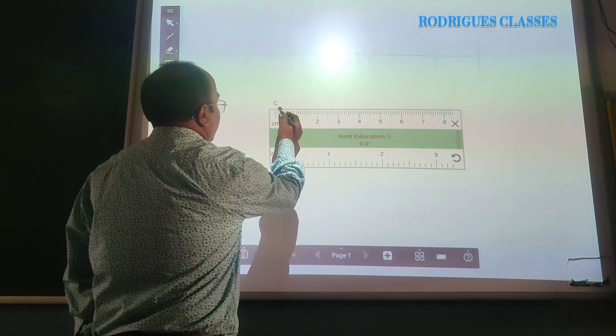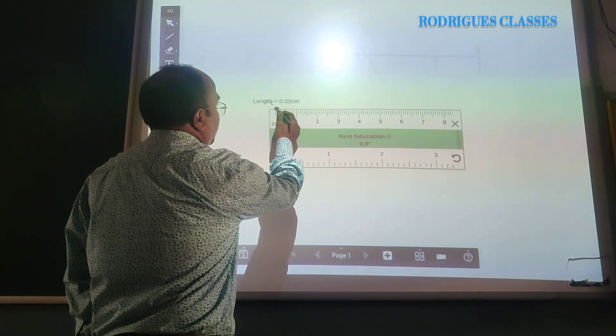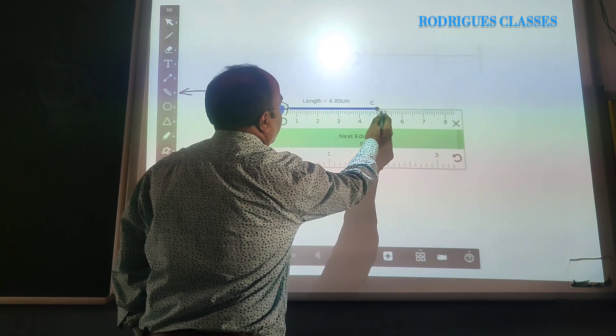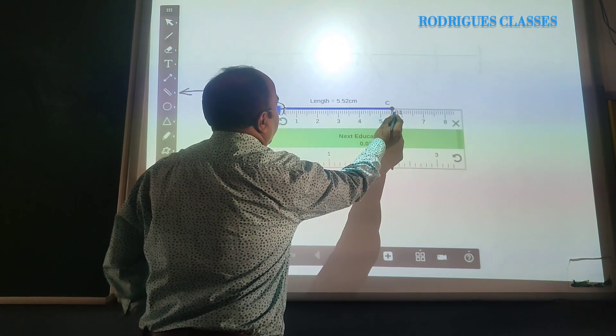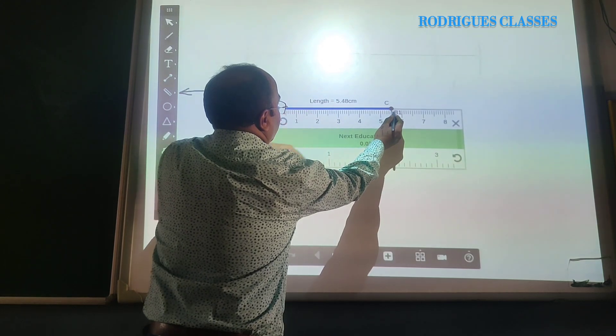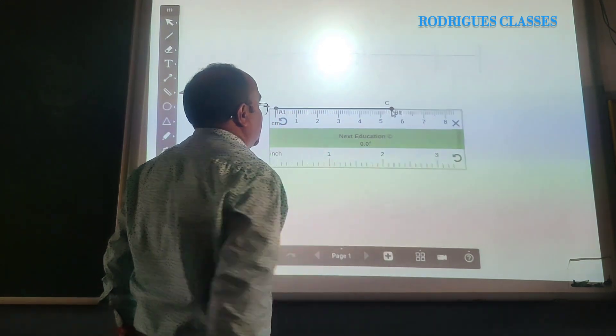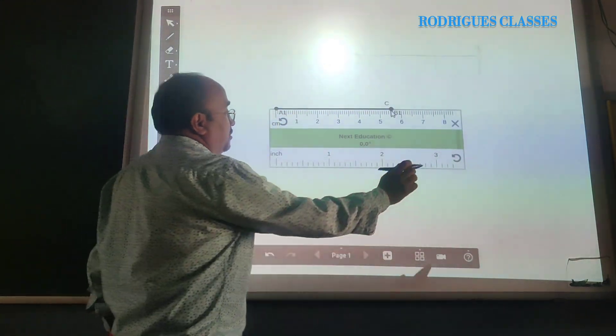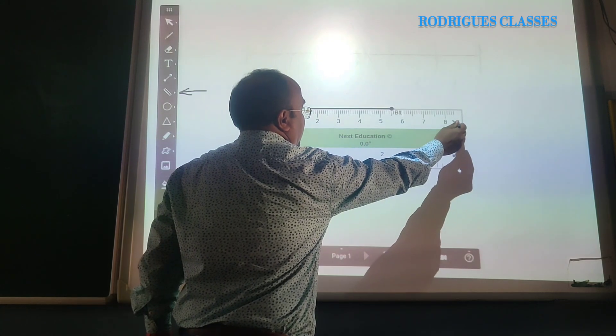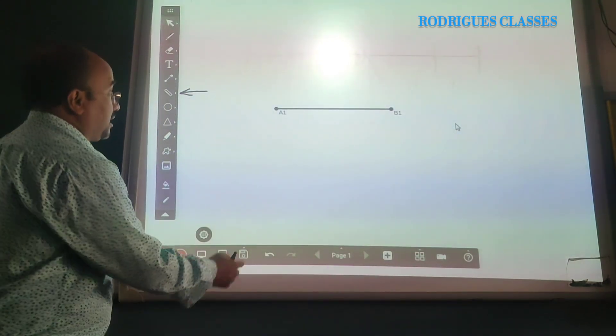So, for example, if I have to draw a line segment of 5.5 cm, I take it and I bring it up here. I can see the value also here. So, once it gets to 5.5 cm, my use of scale is not required, I will remove it. So, scale is done.